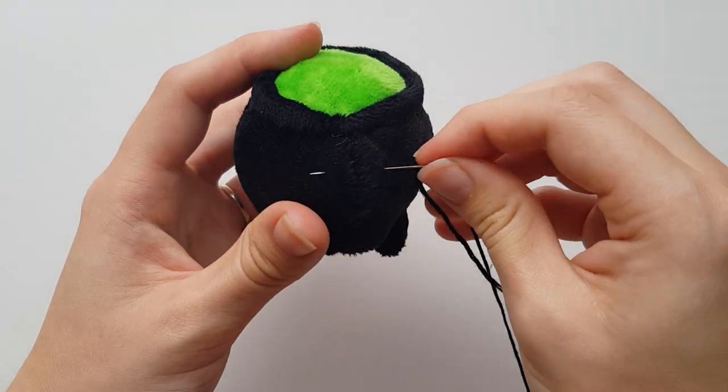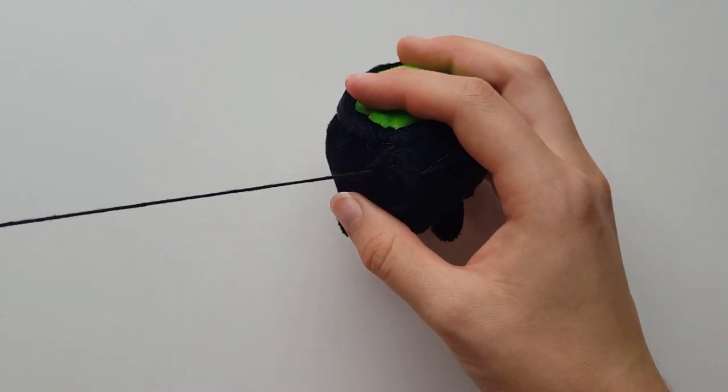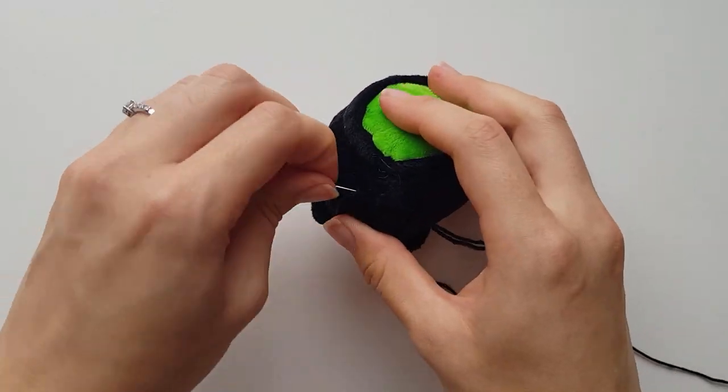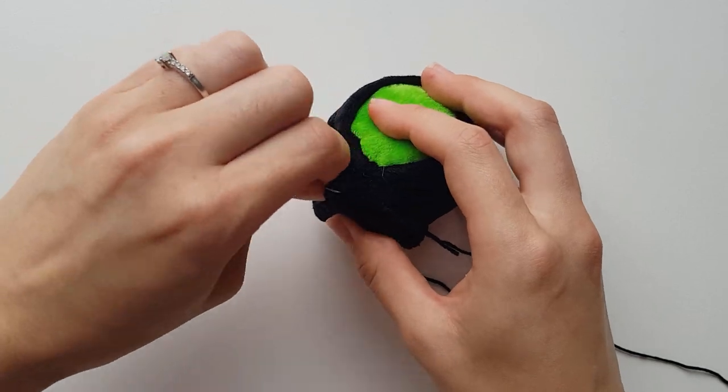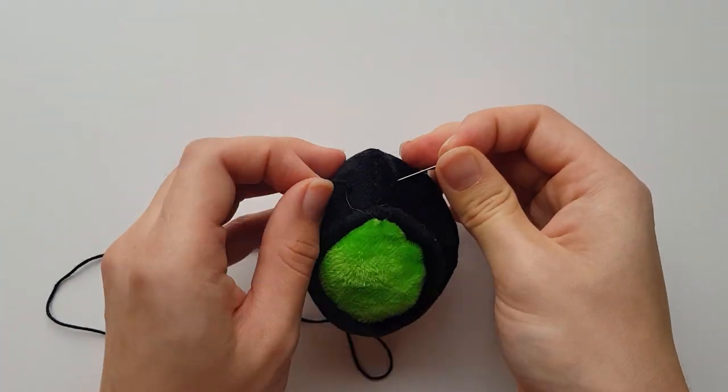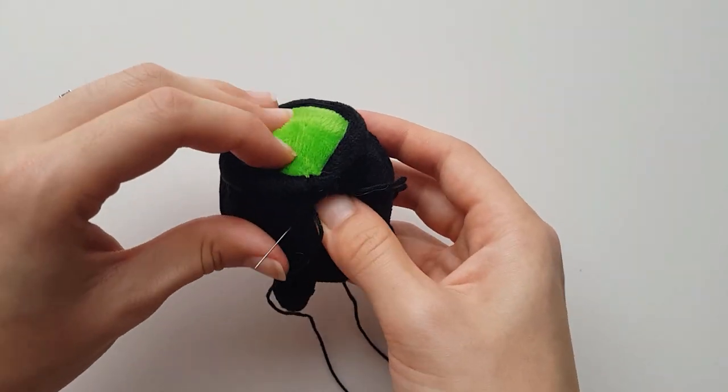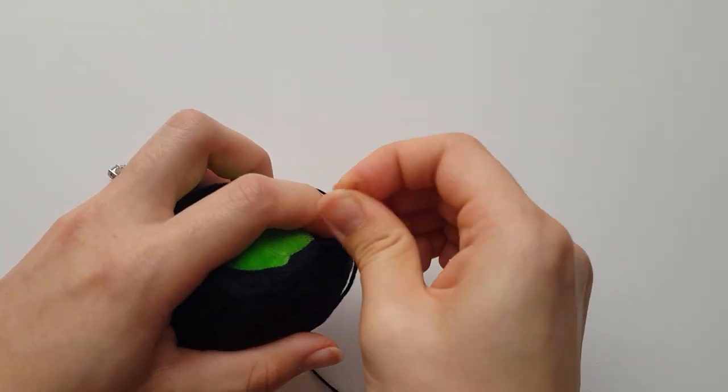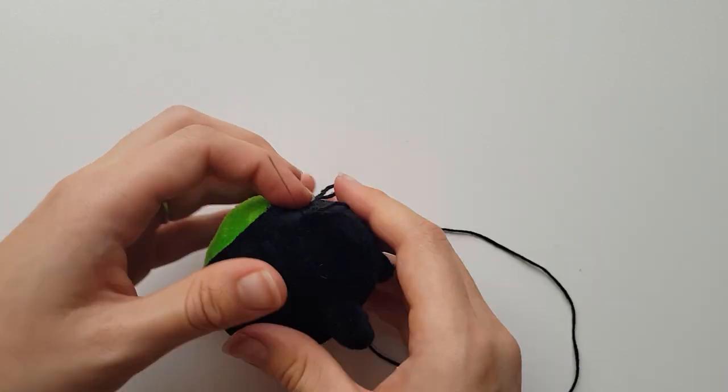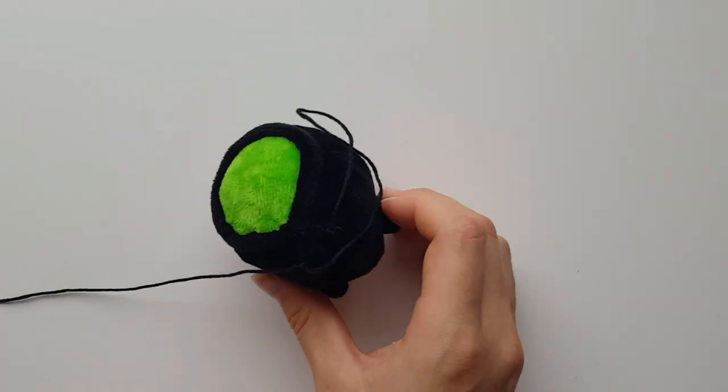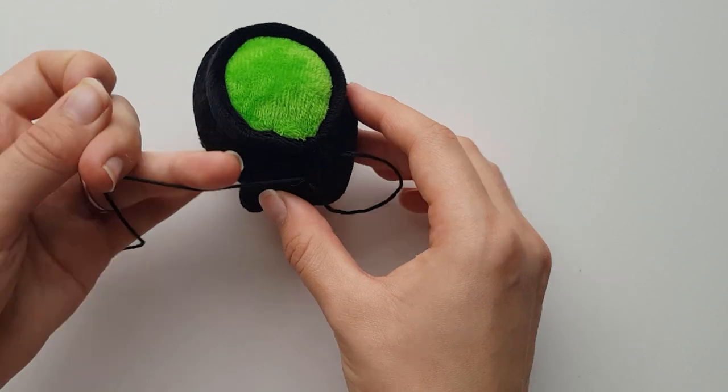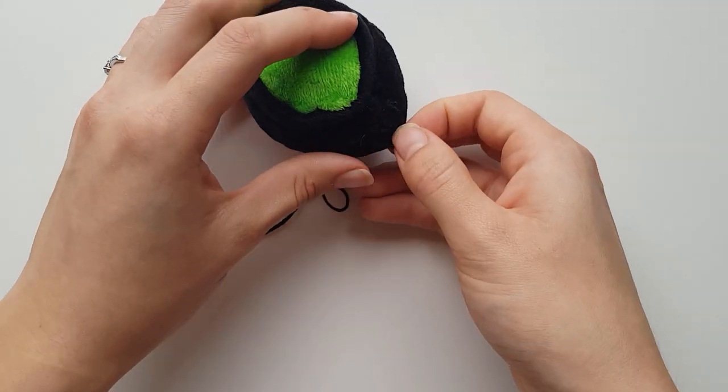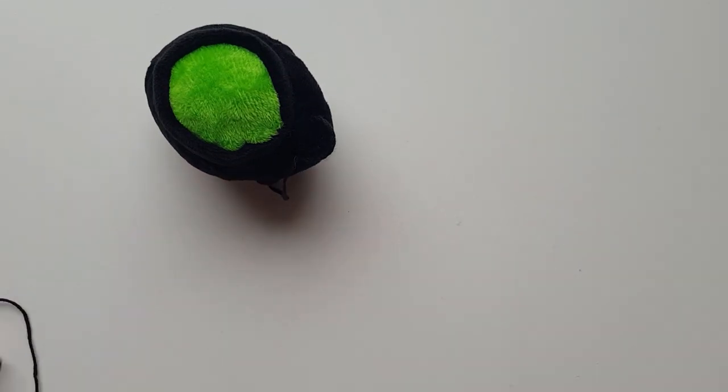Take the black embroidery floss and on the side of the pot, sew in a little out from the seam, leave about a centimeter gap on the other side of the seam and pull the thread out. Sew the needle into the place you started and pull it out where you just left, leaving a small loop. Then tie off the thread to create a small handle.